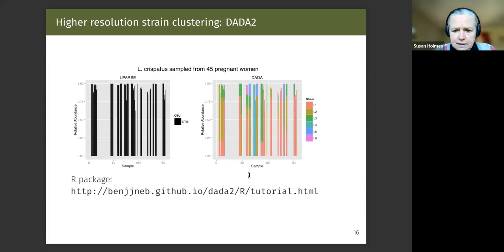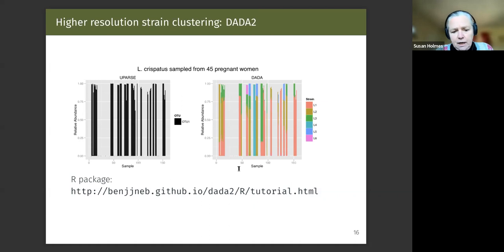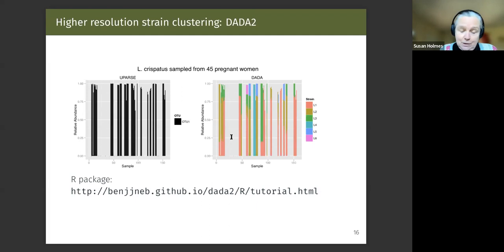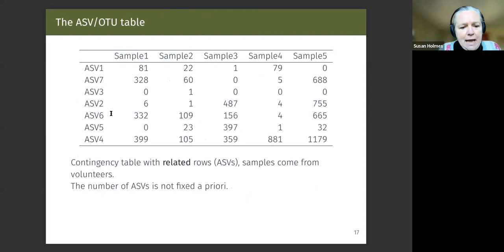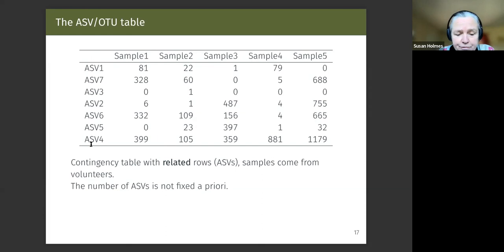OTUs agglomerate data, and if you're not within the radius they say there's a lot of diversity but don't denoise it properly, so you don't see the strains. In DADA2, for instance with Lactobacillus crispatus — which is really important in the study of the vaginal microbiome in pregnant women — we have these strains at much higher resolution. There's a nice tutorial, and Ben keeps up a set of tools for understanding how this works. We benefit in longitudinal studies from being able to follow the strains, and strains matter — as we see with COVID.